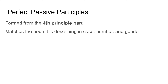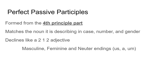The perfect passive participle matches the noun that it's describing in case, number, and gender — remember how we talked about how it's like an adjective? This is why. It declines like a 2-1-2 adjective. It has masculine, feminine, and neuter endings, so it has -us, -a, -um and all the tables that go with those.